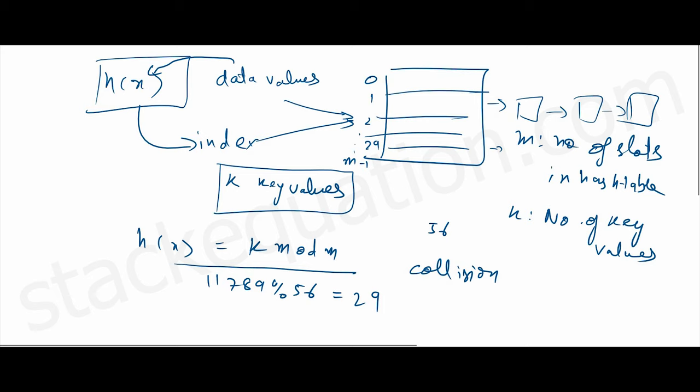What we want is to select a value of m such that for each key value the hash function returns a unique value. So m should be a value for which k mod m should return a unique value so that we can avoid collision.